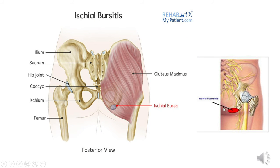Ischial bursitis can also occur when gluteus maximus is in use during a sitting position — for example, during bicycling, where repetitive hip extensions are performed. The point where we sit becomes tender, and pain is increased when using gluteus maximus, such as when climbing stairs or cycling.